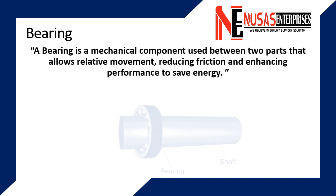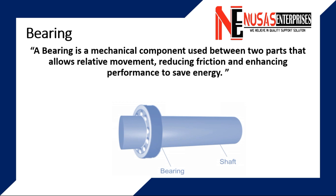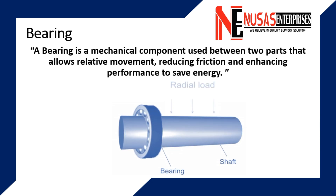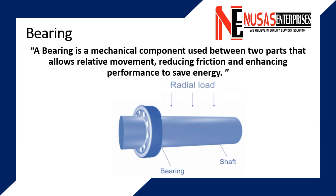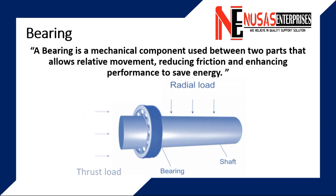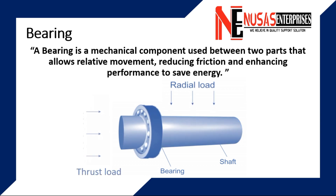A bearing is usually under two types of load. Number one is radial load, and number two is thrust load. A radial load acts in radial direction while thrust load acts in axial direction, as shown in this animation.